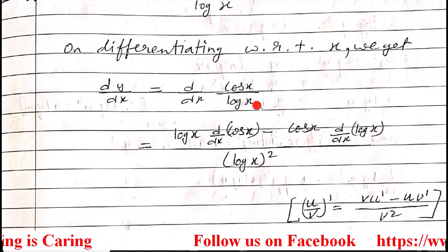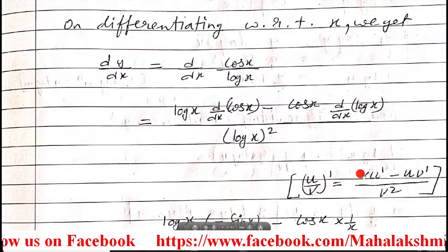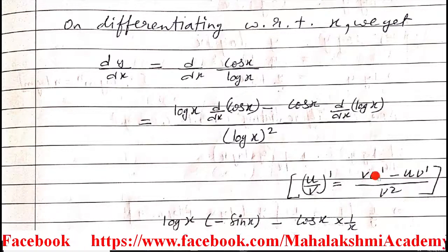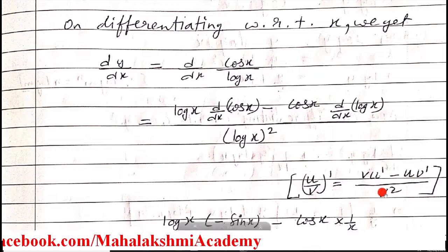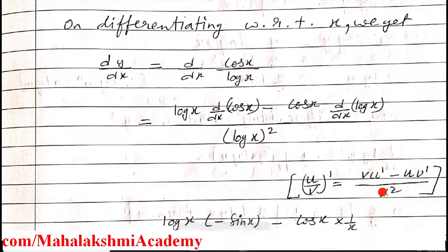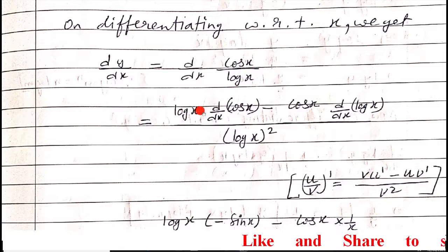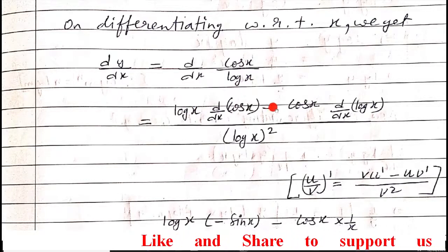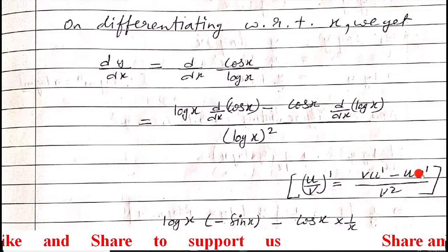When we differentiate, since it is a fraction, we use the quotient rule: denominator squared in the bottom, then denominator as-is times numerator differentiation, minus numerator as-is times denominator differentiation. The denominator is log x, so log x squared goes in the denominator.